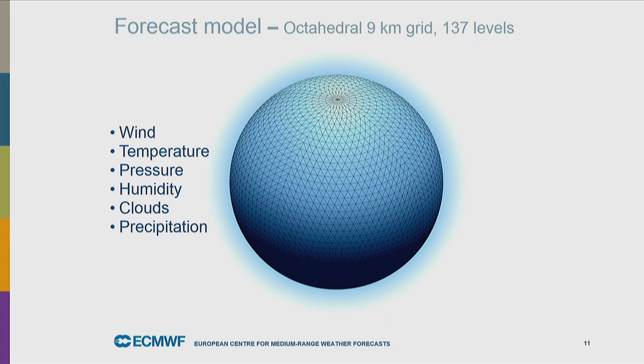We compute wind, temperature, pressure, humidity, clouds, and precipitation at all these grid points. Of course the picture shown here is with a much coarser grid than 9 kilometers - if I showed the 9 kilometer grid it would be just black on the picture. This is just to show the octahedral grid and its general properties.